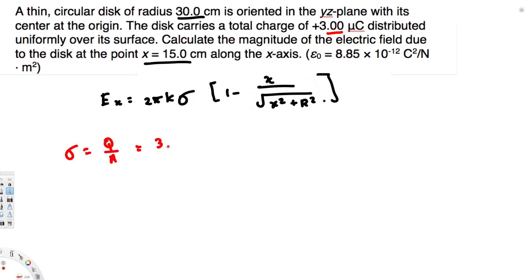That's 3 microcoulombs, or 3 × 10⁻⁶ coulombs. The area of the disk is πr², so π times the radius—30 centimeters in meters is 0.3—squared.